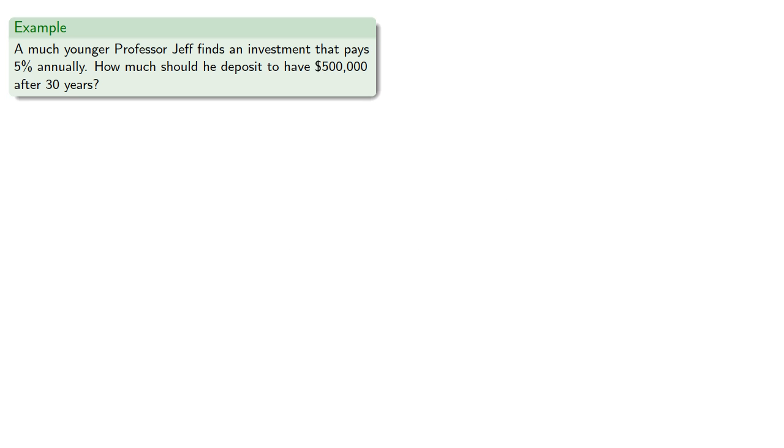Fortunately, this is math, so anything is possible. So a much younger Professor Jeff finds an investment that pays 5% annually. How much should he deposit to have $500,000 after 30 years?